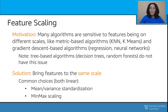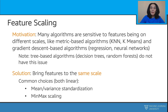Many algorithms are sensitive to features being on different scales — metric-based algorithms such as k-nearest neighbors and k-means, or gradient-based algorithms such as linear regression, logistic regression, or neural networks. Bringing features to the same scale is a very popular transformation in the scikit-learn library. Common choices we're going to explore next are mean-variance standardization and min-max scaling.